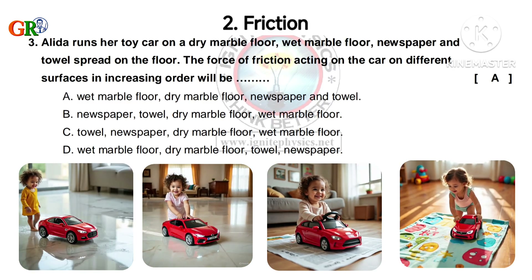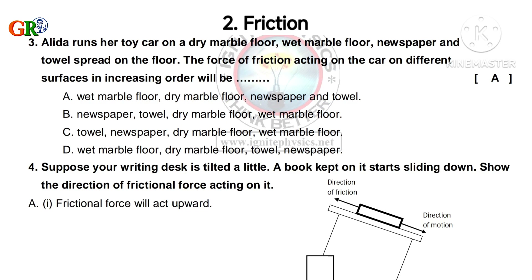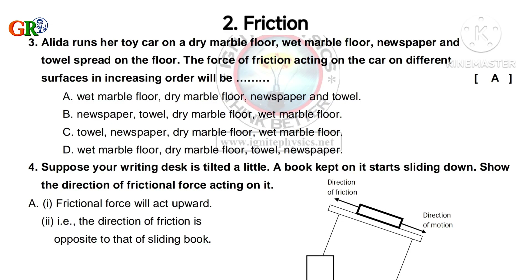Fourth question: Suppose your writing desk is tilted a little and a book kept on it starts sliding down. Show the direction of frictional force acting on it. The frictional force will act upward, because friction always acts opposite to the direction of the object. So here the direction of friction is opposite to that of the sliding book.